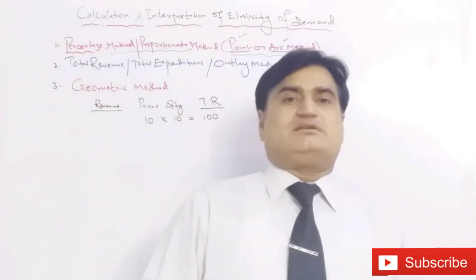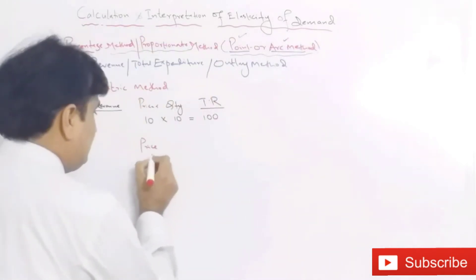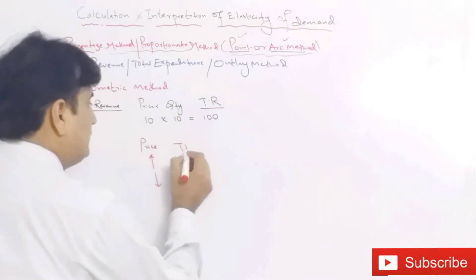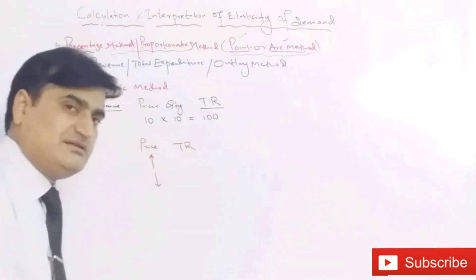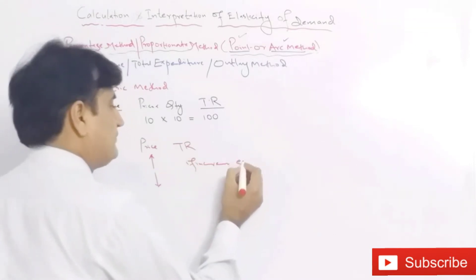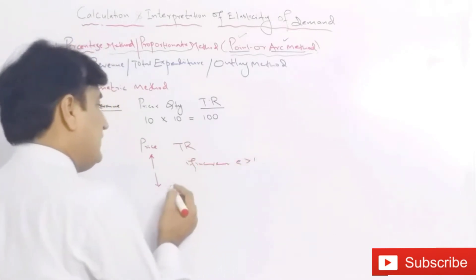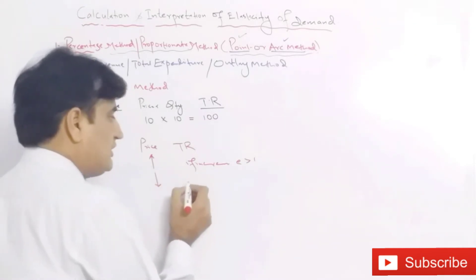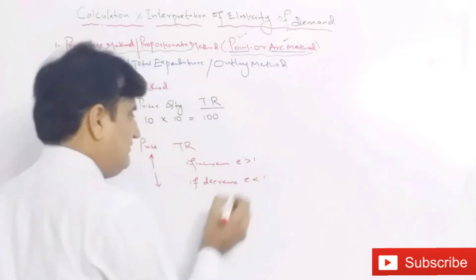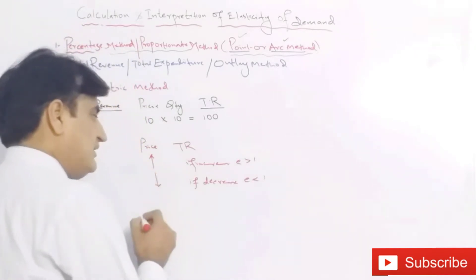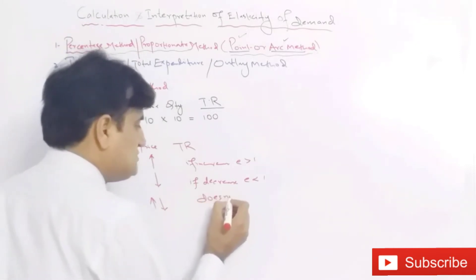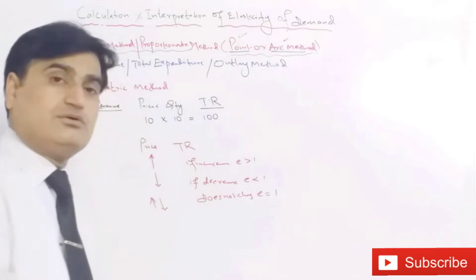The total revenue method states that when the price increases or decreases, the total revenue also increases or decreases accordingly. If the total revenue increases, the elasticity is greater than 1. When the price decreases and the total revenue also decreases, the elasticity is less than 1. When an increase or decrease in price leaves the total revenue unchanged, the elasticity is equal to 1.